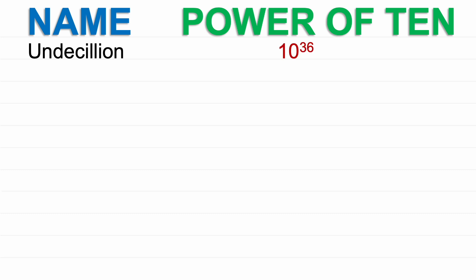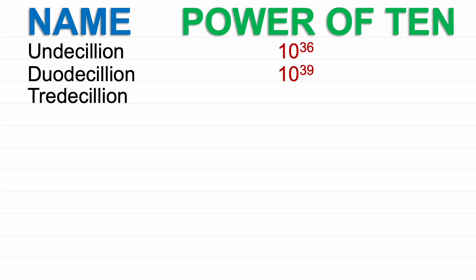Undecillion: 10 to the power of 36. Duodecillion: 10 to the power of 39. Tredecillion: 10 to the power of 42.